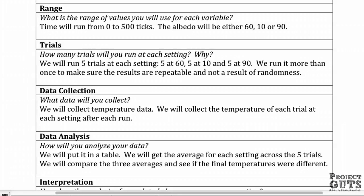Another important question is how many trials you'll run at each setting. A trial is running through something once, and then having multiple trials means doing the exact same thing multiple times. The reason to do this is to make sure our results are repeatable, and not just a result of randomness. Since there is randomness in our model, it's very important that we run multiple trials.